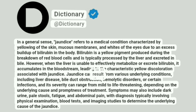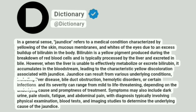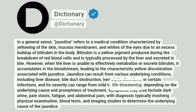Jaundice can result from various underlying conditions, including liver disease, bile duct obstruction, hemolytic disorders, or certain infections, and its severity can range from mild to life-threatening, depending on the underlying cause and promptness of treatment.